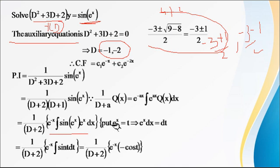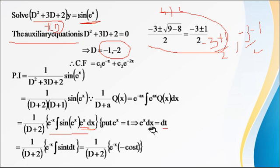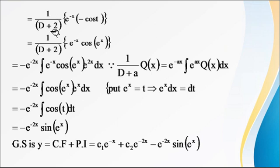To find this integral, use the substitution method. Put e raised to x equal to t, so the derivative gives e raised to x dx equal to dt. Replacing e raised to x with t and e raised to x dx with dt, sin(e raised to x) becomes sin(t) and the integral becomes the integral of sin(t) dt. The integral of sin(t) is minus cos(t). Replacing t back with e raised to x, we get 1 upon (D plus 2) of e raised to minus x times minus cos(e raised to x).